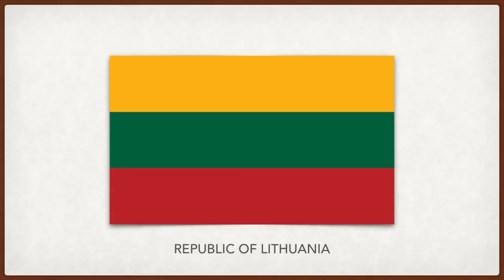Albania: the red stands for bravery, strength, and valor, while the double-headed eagle represents the sovereign state. Lithuania: the yellow symbolizes the sun and prosperity, the green is for the forest, the countryside, liberty, and hope, and red represents the blood and bravery of those who have died for Lithuania.